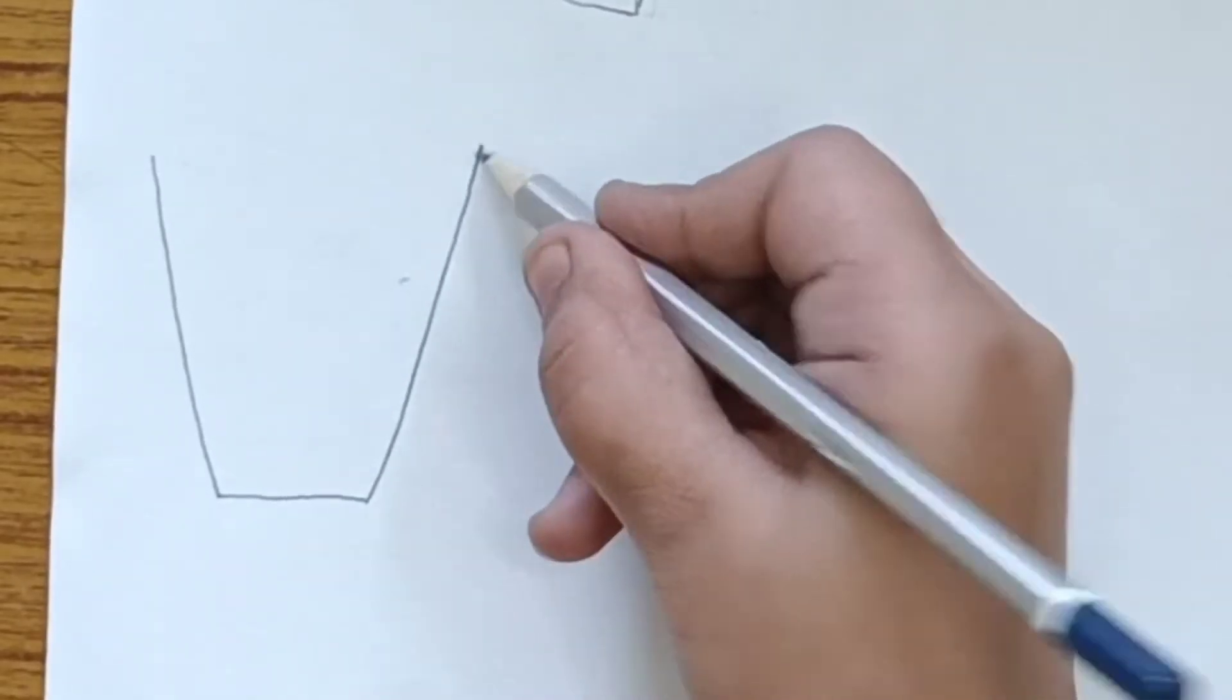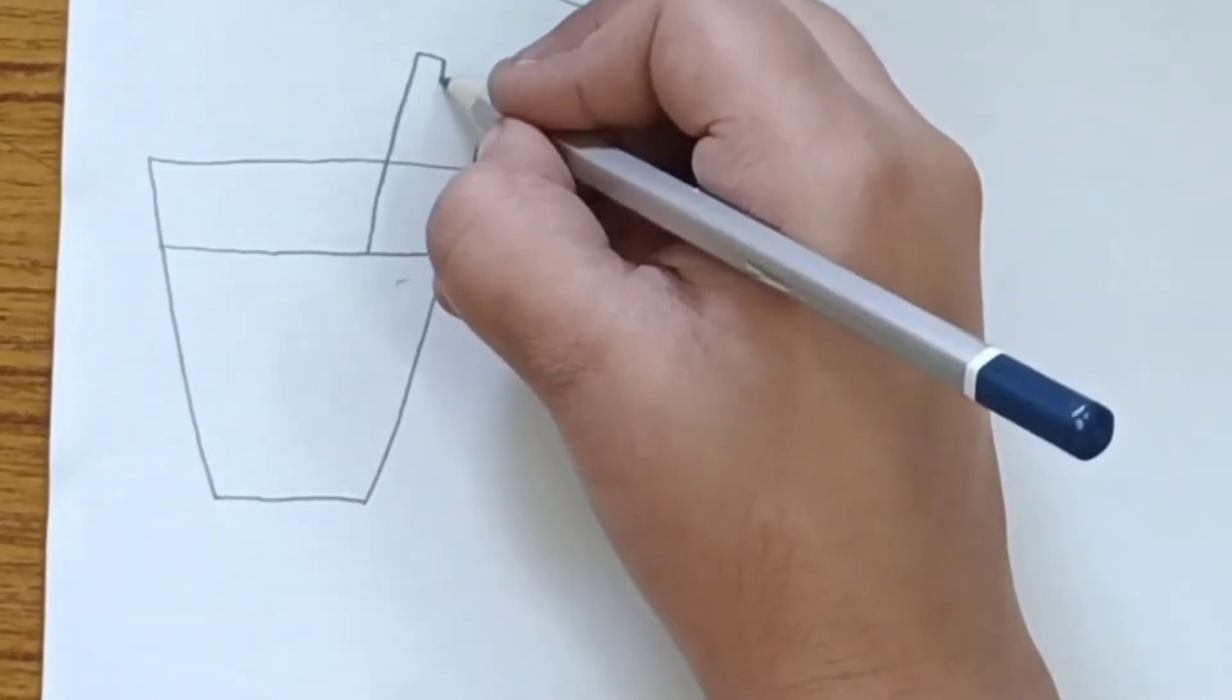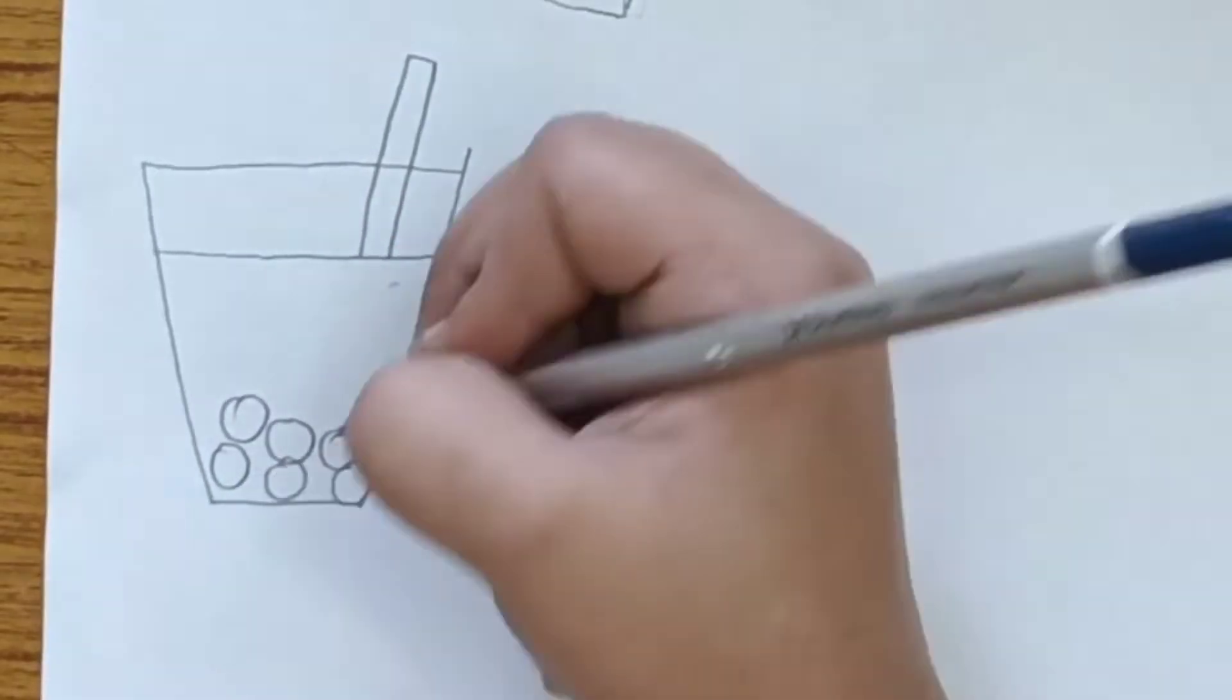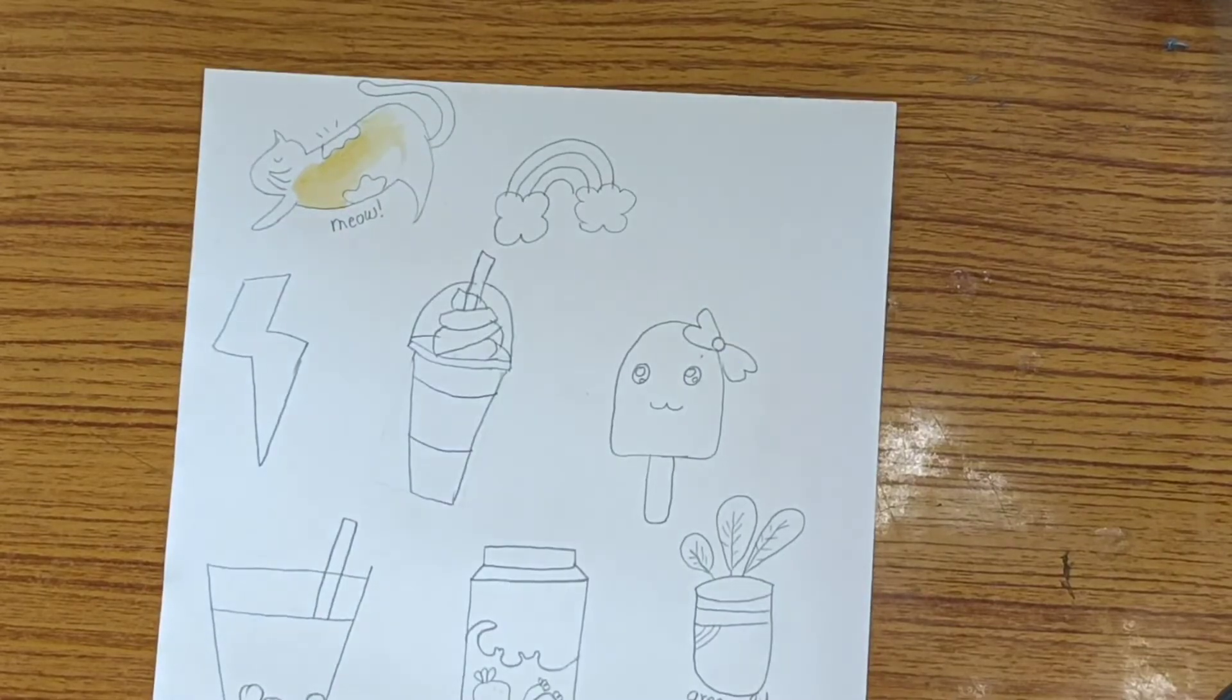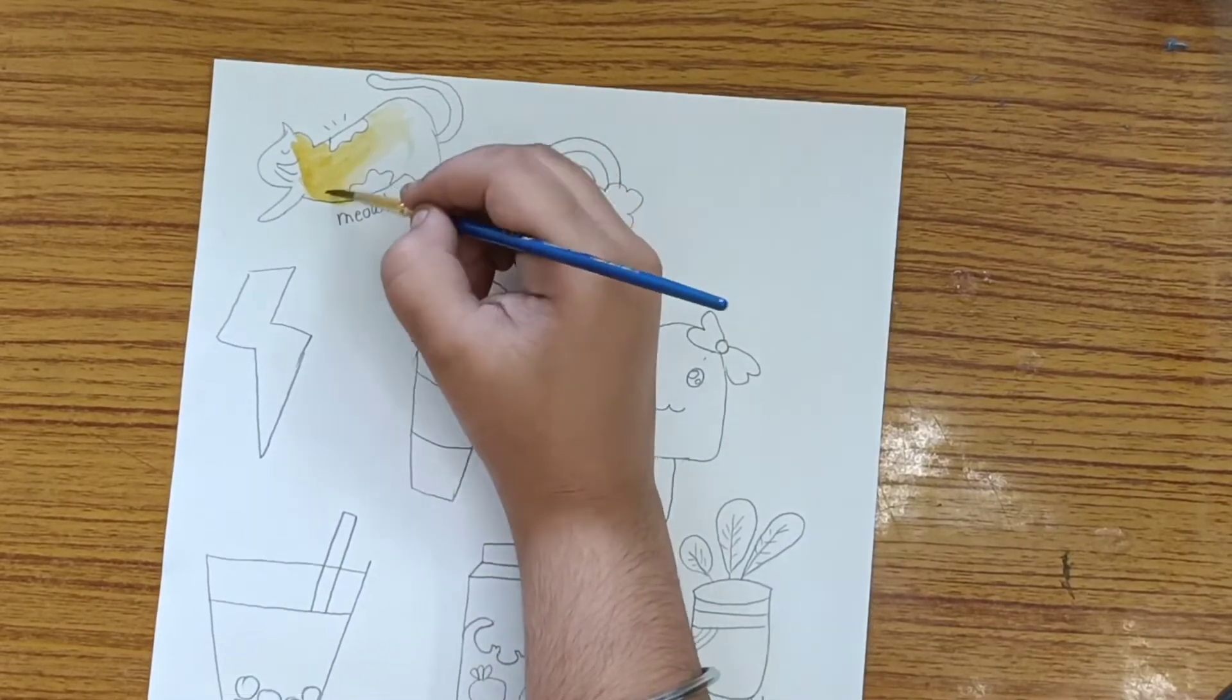Now I am making a boba drink. I am making a popsicle which is what everyone knows. Now I have made many characters. Now let's go to the painting, which is my favorite part.